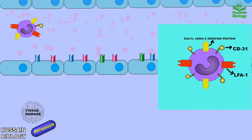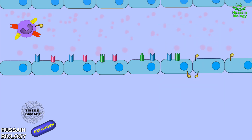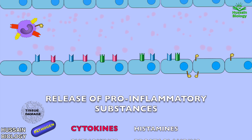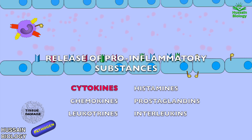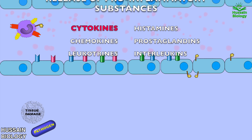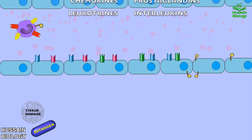Blood flow in the blood vessel is mostly linear and most cells flow at the center of the vessel. But the onset of injury, damage, or presence of a pathogen changes the dynamics of blood rheology. When there is tissue damage or presence of a pathogen, the immune system is triggered, causing release of pro-inflammatory substances in the form of cytokines like interleukins, histamines, prostaglandins, and leukotrienes that mediate the chemoattraction process.